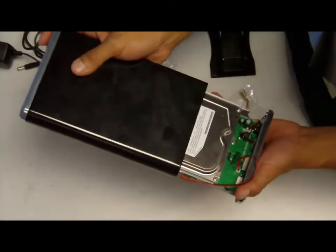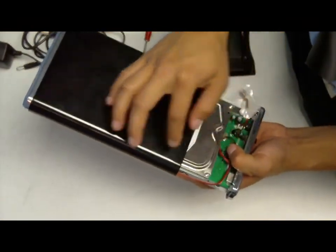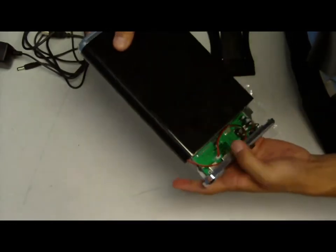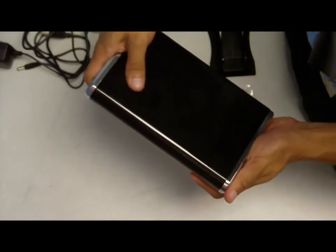Alright, so once you've got it slid in, make sure to not get this wire caught in between the tray so it doesn't strip it. We'll lay the wire right on there. It should go ahead and close.